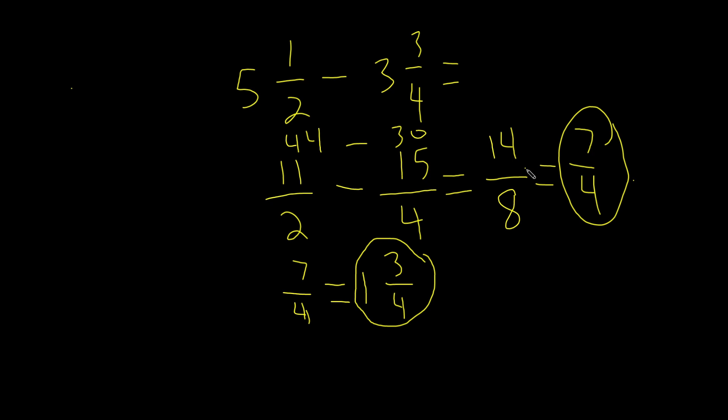Now let's do another example. Let's do 4 and 3 fourths minus 2 and 7 eighths. And remember, our first step is to convert these two into improper fractions.